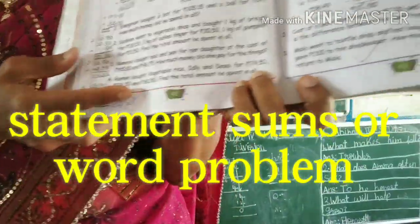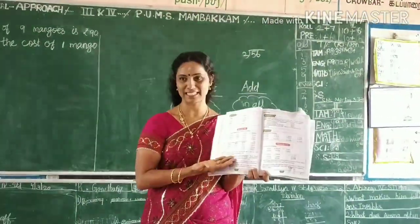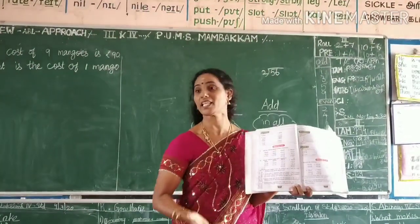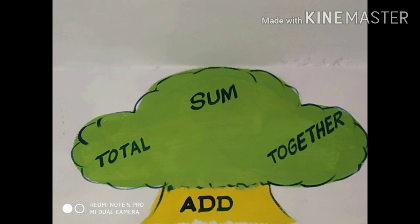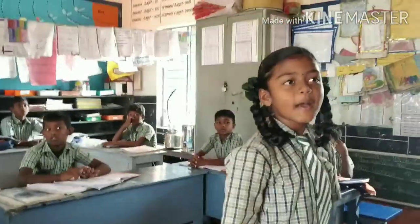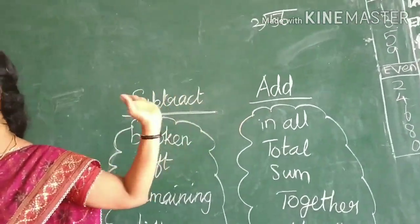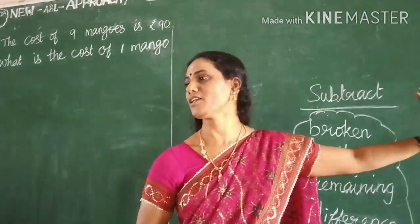For statement sums, you may have confusion about whether to do addition, subtraction, multiplication, or division. You have to remember some keywords for addition and subtraction. The keywords for addition are: total, together, and sum. If you have a statement sum, check whether these words are appearing or not — if they are, then you just add.